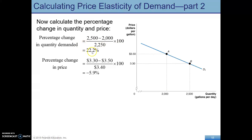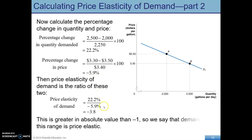That gives us a percentage. Then we do the same thing for price on the bottom — new minus old, keeping that straight. Price fell, so this is going to be a negative number on top, divided by the average price times 100. So we have 22.2% and negative 5.9%. And remember, we normally think about taking the absolute value. So this number is a lot bigger than 1, so we say that demand in this range is price elastic.